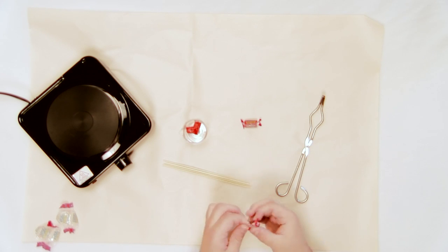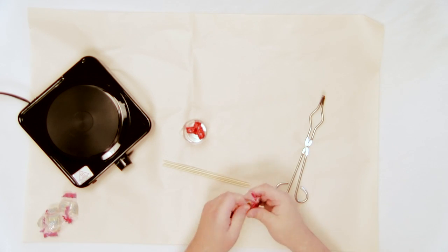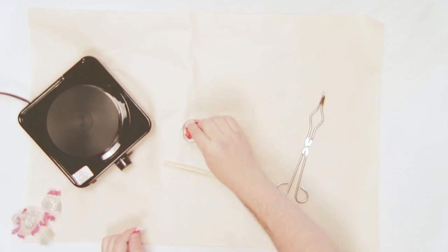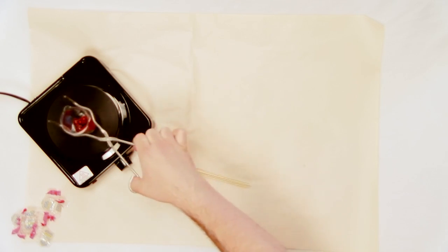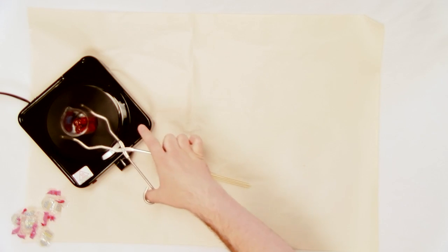Unwrap and place four to six Jolly Ranchers into the beaker. Place the beaker on the hot plate and set the hot plate to a medium temperature setting.